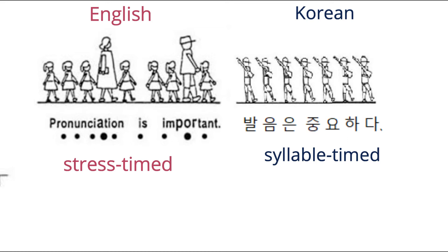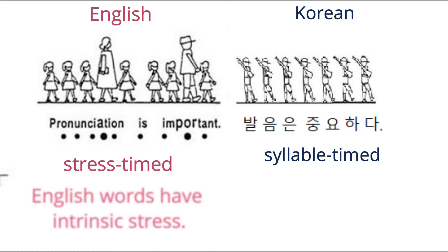The reason that English is a stress-timed language is probably that English words have intrinsic stress. That is, to say English words correctly, we need to know which syllable of the word is stressed. Placing the stress incorrectly means saying the word incorrectly. When English words are said in a sequence, the human proclivity for a regular pattern must have forced stressed syllables of words to occur at a regular interval.